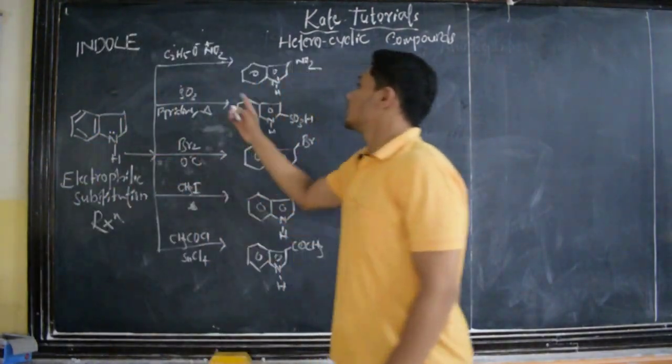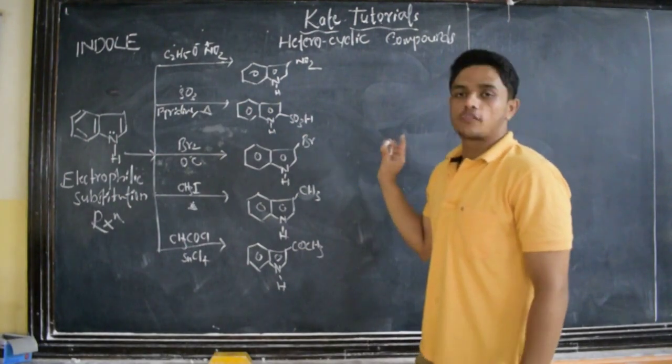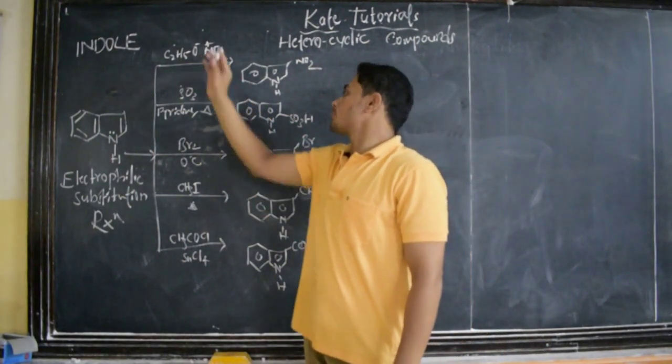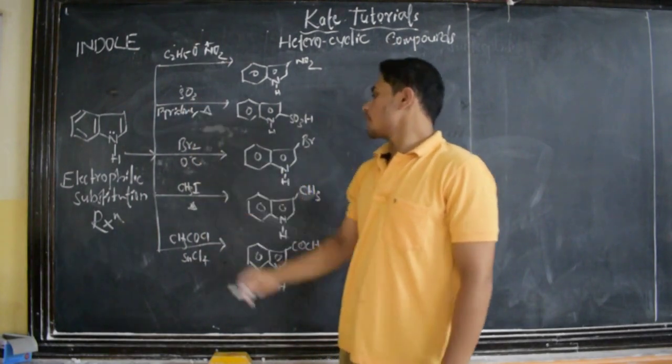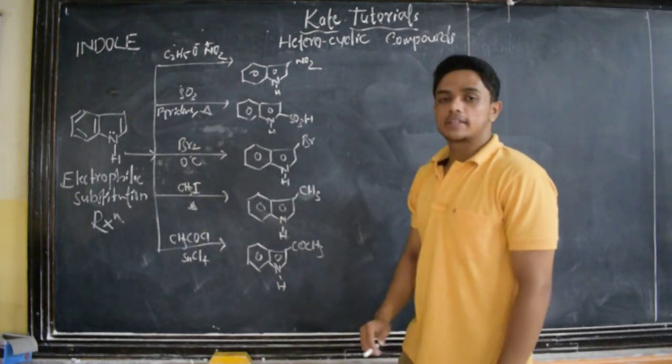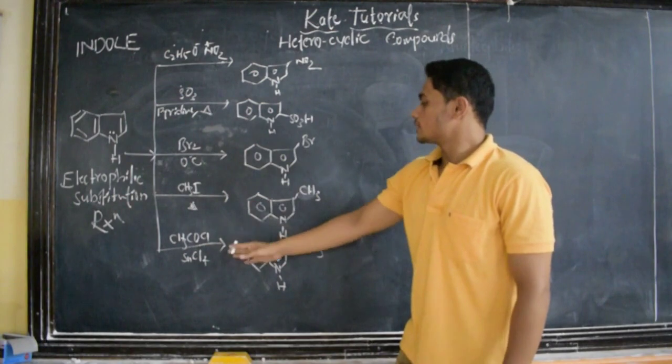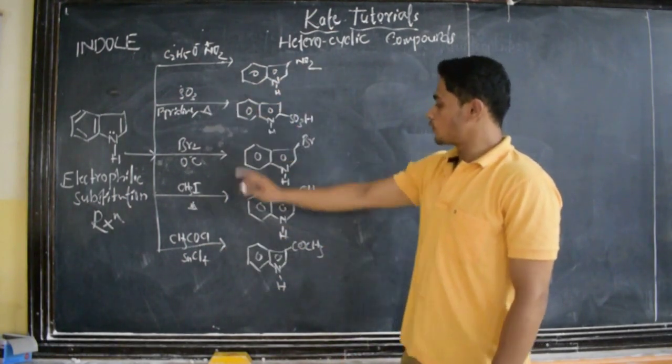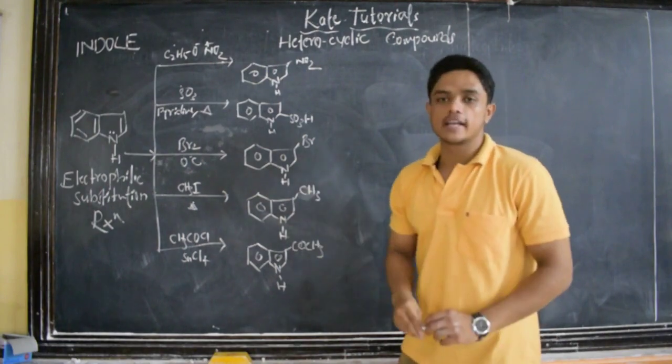This is about electrophilic substitution reactions. These are the electrophiles: NO2+, SO3, bromination, methylation, and acetylation. These are a few examples for electrophilic substitution.